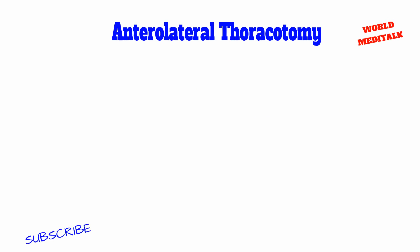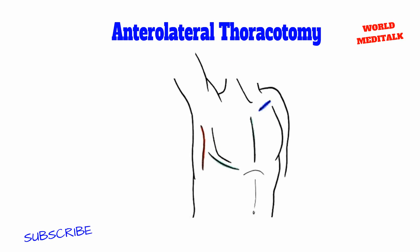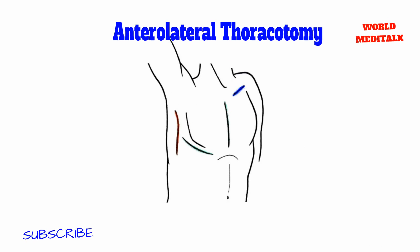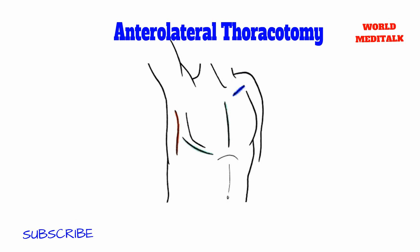The following structures can be accessed by this incision: the heart, hilum of the lung, parenchyma of the lung, and ascending aorta.